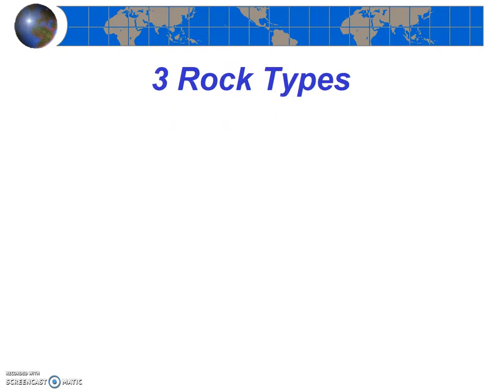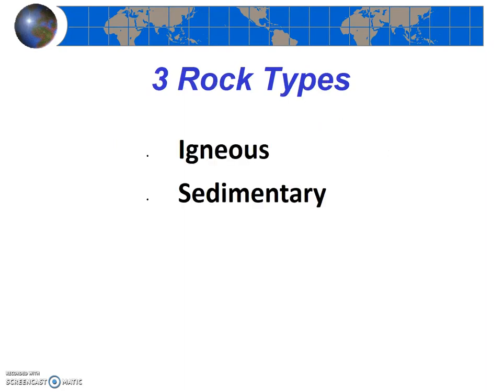There are three different rock types: igneous, sedimentary, and metamorphic. Every rock on the planet can be lumped into one of these three groups. It's important that you be able to define these terms, which means noting how each rock type is formed, and you'll also want to give several specific examples of each type and the subtypes we're going to mention soon.